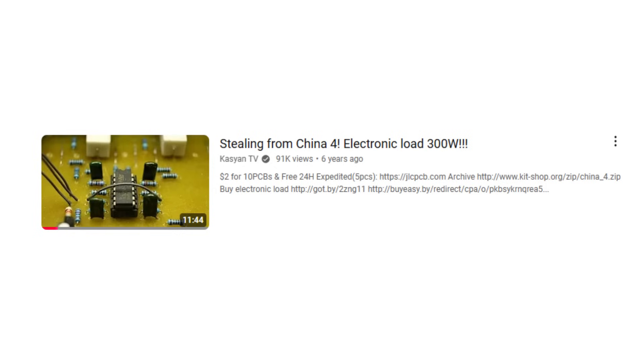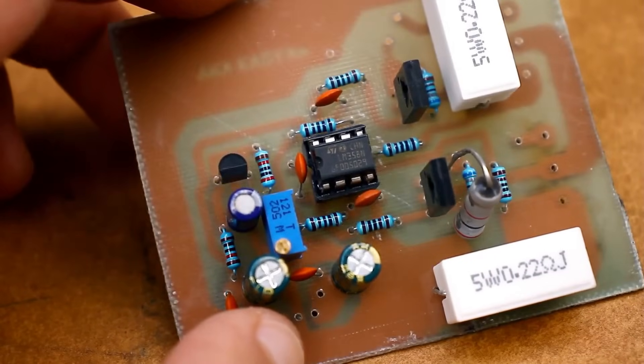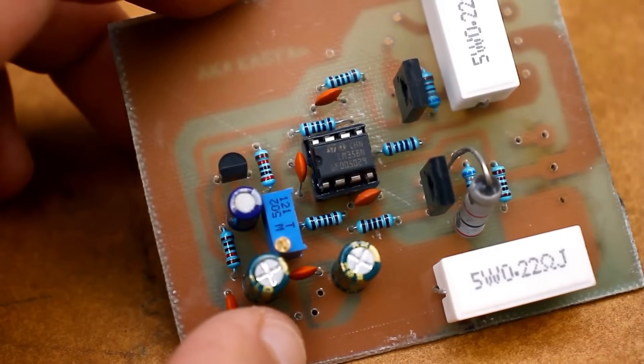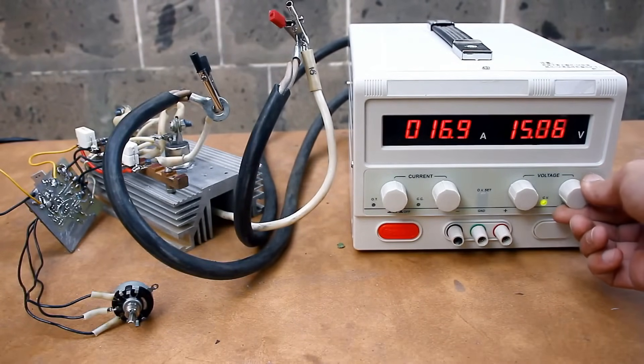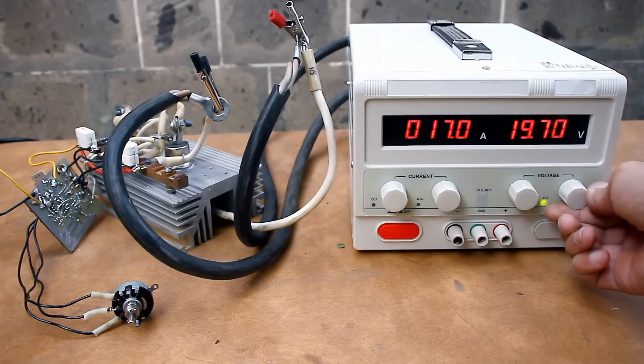I have already explained how a load of this type works in the episode Stealing from the Chinese 4. The link will be in the description. This load is essentially a current stabilizer. That is, you set the load current, for example 1A, and regardless of the voltage of the power source being tested, no matter how it fluctuates, the current will consistently remain at the set level.